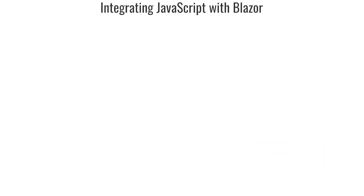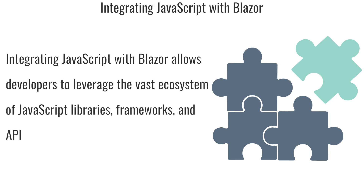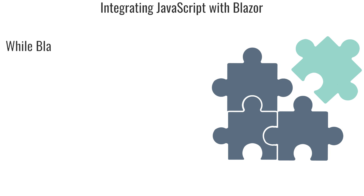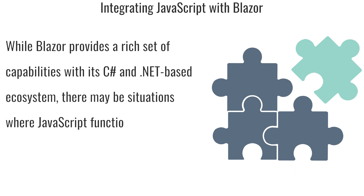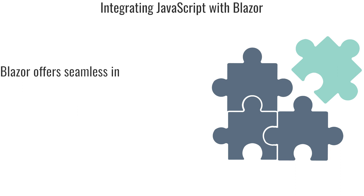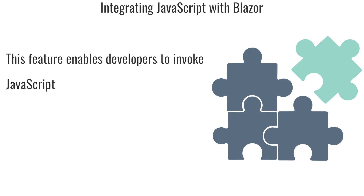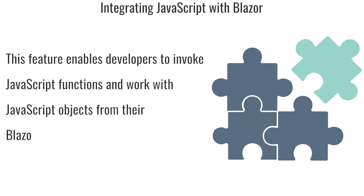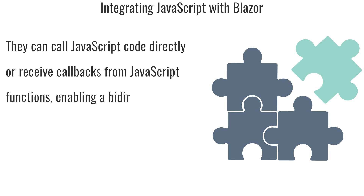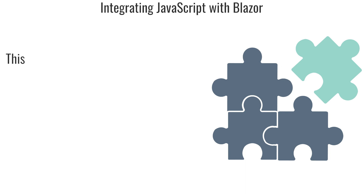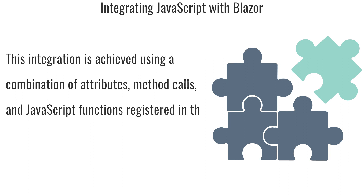Integrating JavaScript with Blazor: Integrating JavaScript allows developers to leverage the vast ecosystem of JavaScript libraries, frameworks, and APIs within their Blazor applications. While Blazor provides a rich set of capabilities with its C# and .NET-based ecosystem, there may be situations where JavaScript functionality is needed or preferred. Blazor offers seamless interoperability with JavaScript through a feature called JavaScript Interop, which enables developers to invoke JavaScript functions and work with JavaScript objects from their Blazor components. They can call JavaScript code directly or receive callbacks from JavaScript functions, enabling a bidirectional communication channel between Blazor and JavaScript, achieved using a combination of attributes, method calls, and registered JavaScript functions.